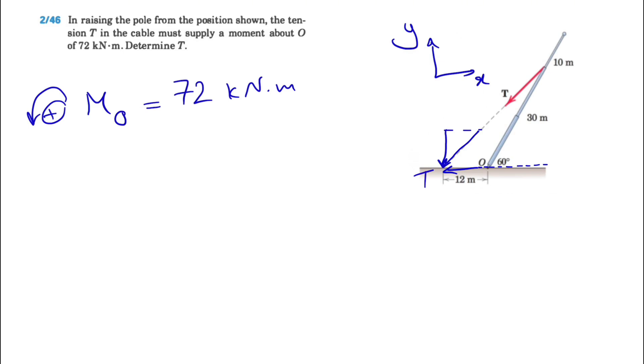So basically, all we need to do in here, if we call this angle alpha, what we have in here for the vertical component or the Y component will be T sine of alpha. And we don't care about the cosine, the X component, which is T cosine of alpha. As I mentioned, there is no moment for that component. So all we need to do in here is to find the alpha.